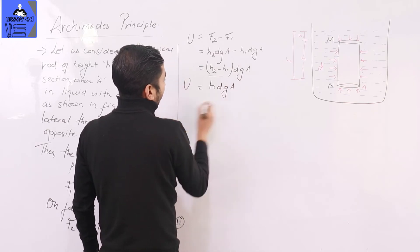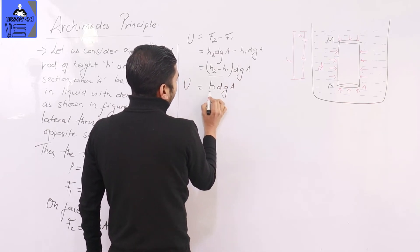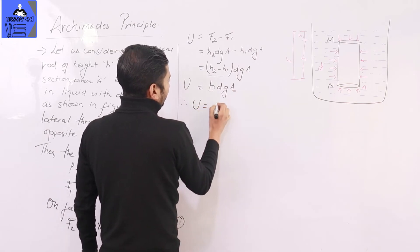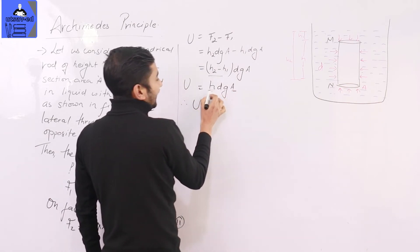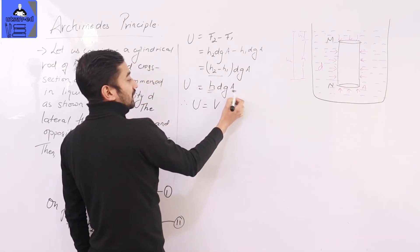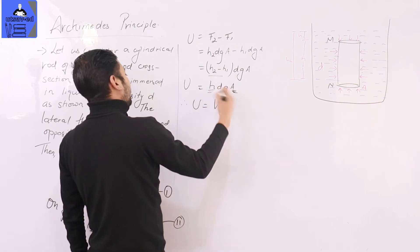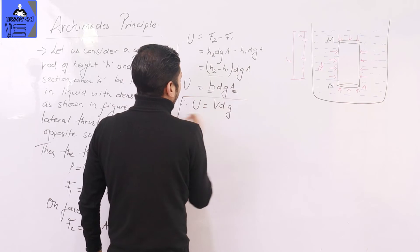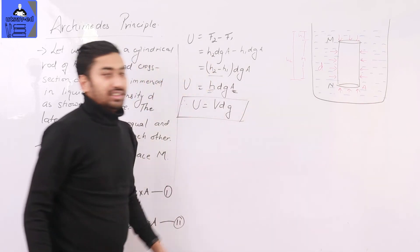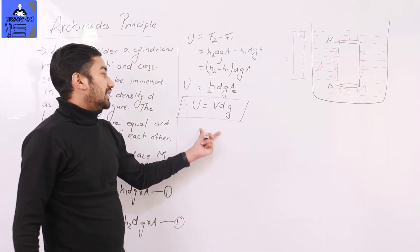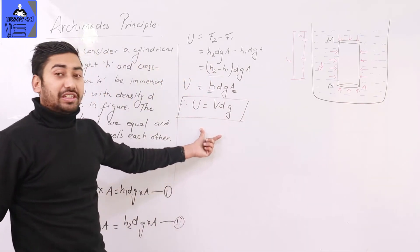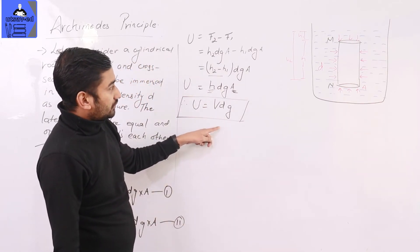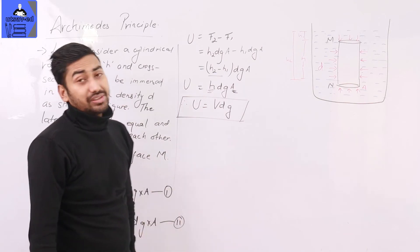Since H2 minus H1 equals H, the height of the cylinder, and H times A equals the volume V, we get: upthrust = V·D·G. This is the final expression for the upthrust on the cylindrical body immersed in liquid.